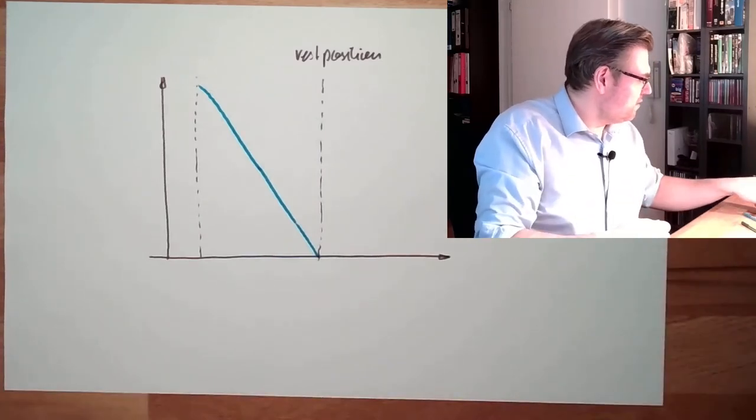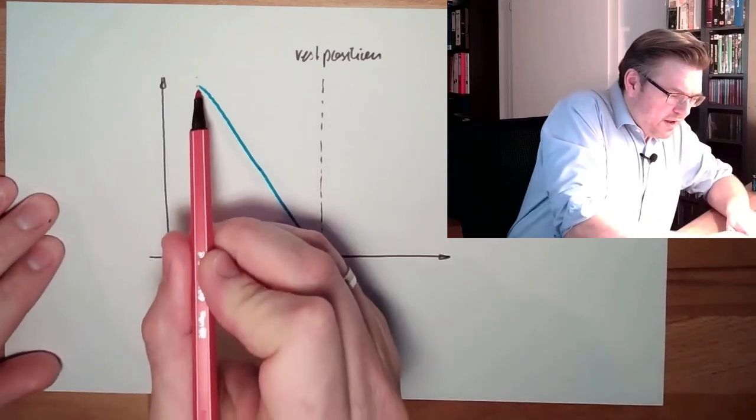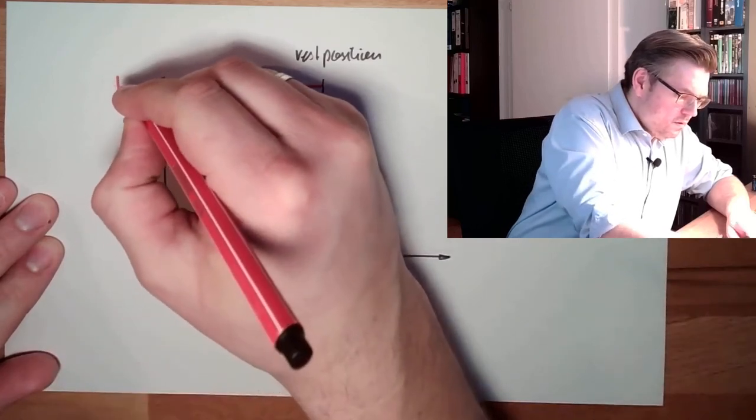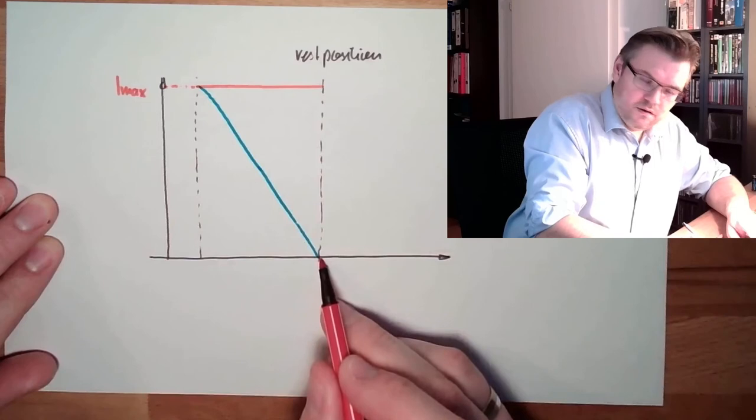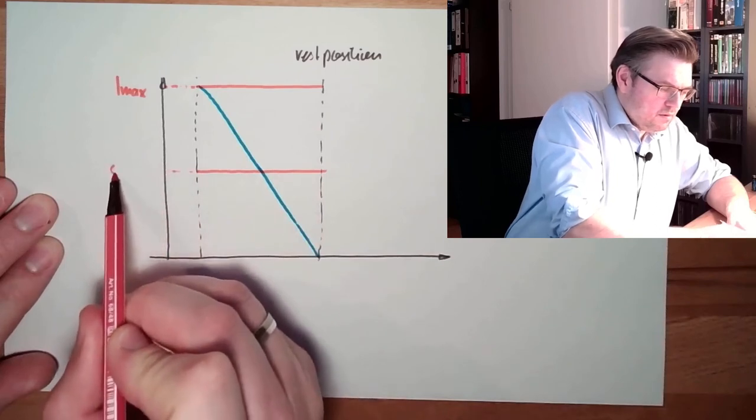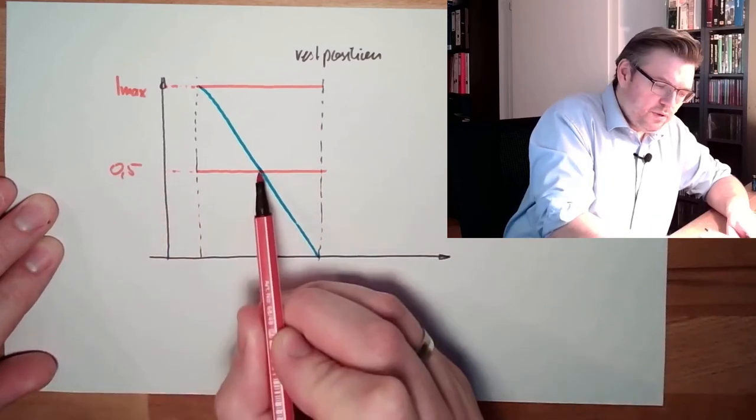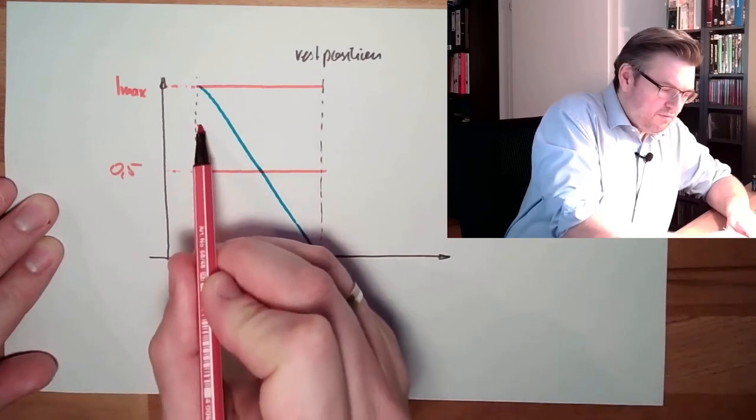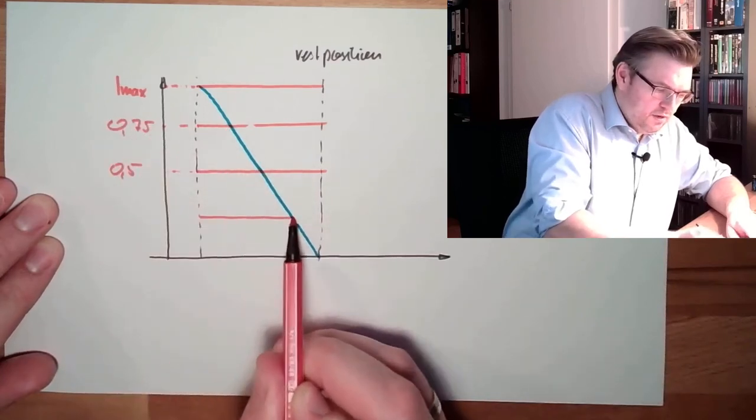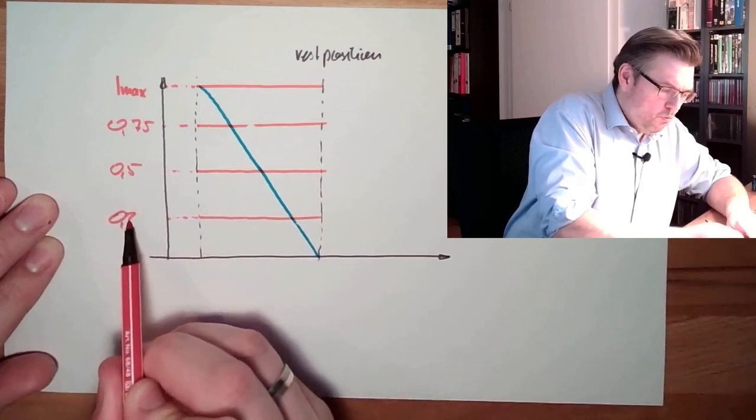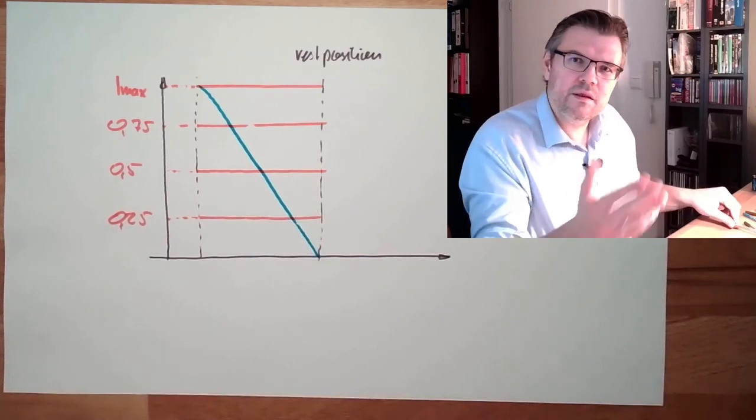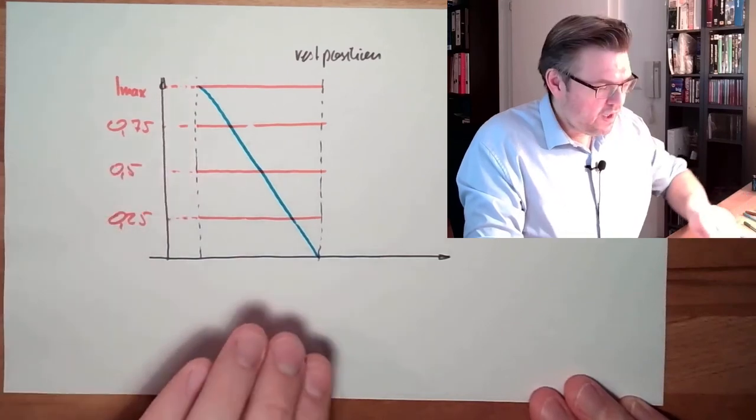And then, we do have different currents. We have here somewhere a maximum current. We have a zero current. Then we are here. And of course, if we have 50% current, it would be nice to be at the half. If we have 75% current, it would be nice that we have three quarters. And also here, it would also be nice to have one quarter of the movement.